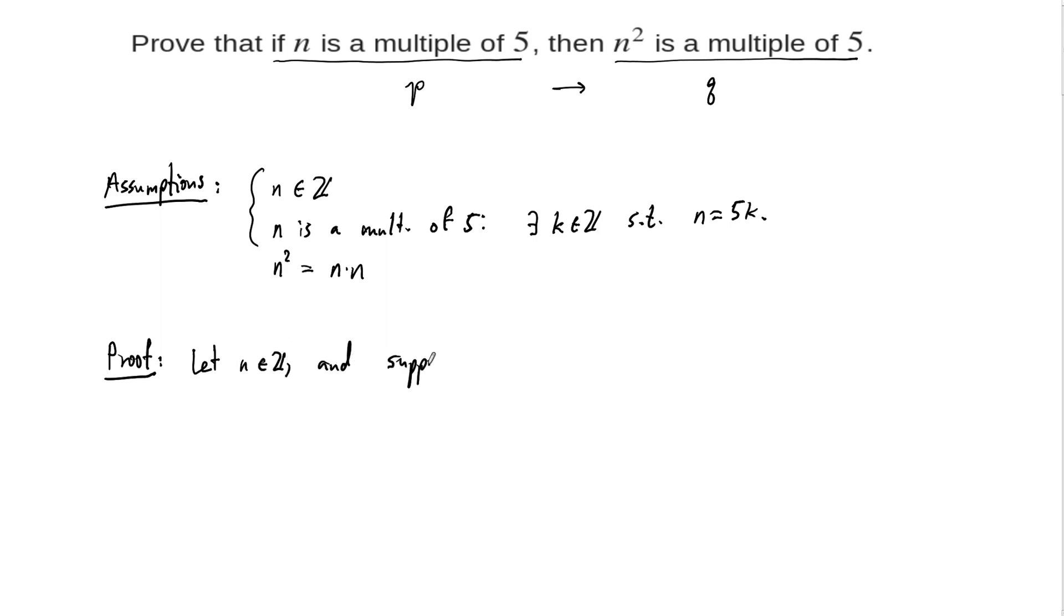again, you need to write complete sentences here when you write a proof. So suppose that n is a multiple of 5. In some ways, this feels like we're restating the beginning of the statement that we're asked to prove, and actually we are, right?